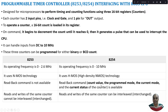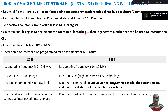Let us start with the fundamentals of your programmable timer controller. Time is nothing but an interval created between two events. This time can be created using counters available in this programmable timer controller. We have three 16-bit registers, or counters, which can perform timing and counting functions. The counter will be initially loaded with a 16-bit value and it starts to decrement the count until it reaches 0.